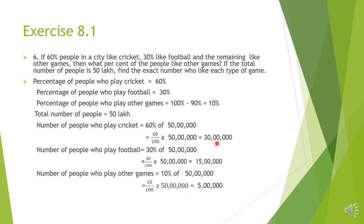To verify: 30 lakh plus 15 lakh plus 5 lakh equals 50 lakh people total. Alternatively, 30 lakh plus 15 lakh equals 45 lakh, and 50 lakh minus 45 lakh gives 5 lakh for other games. Any method can be used and the answer will be the same.